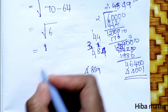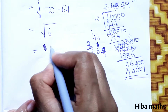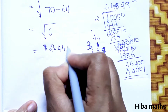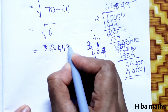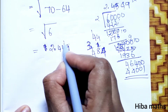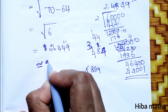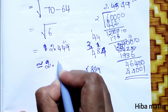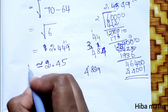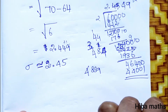The answer is 2.449, so rounding off, the standard deviation value is approximately 2.45.